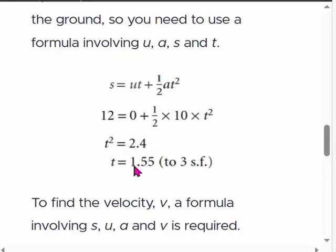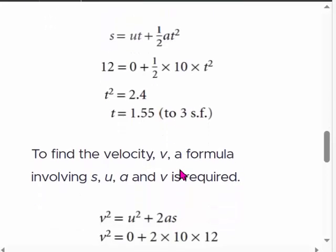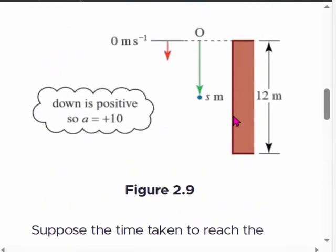You normally take the positive value because it's time. It's the square root of 2.4 - you might see plus or minus 1.55, but we use the positive value. So that is the time it takes from top to bottom.